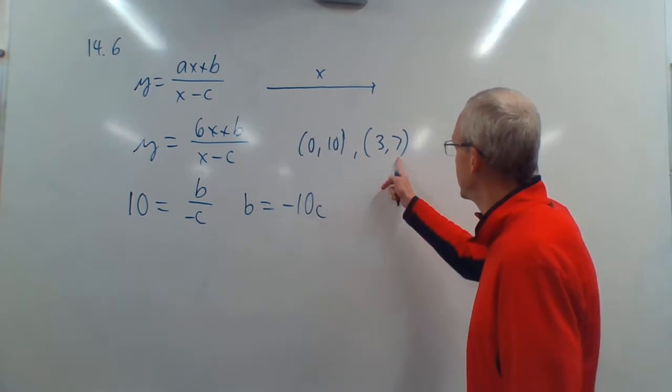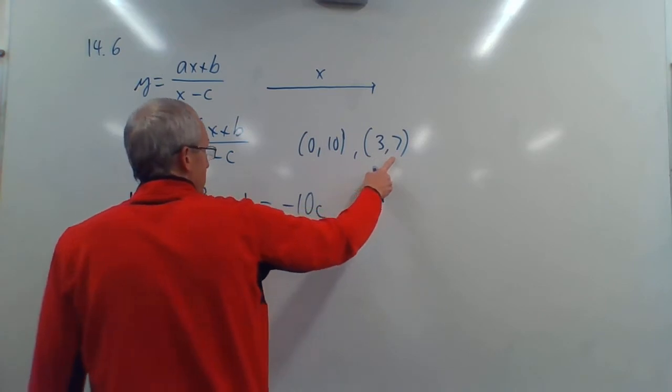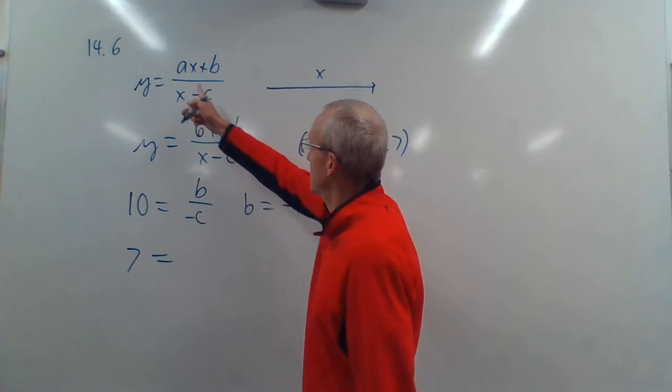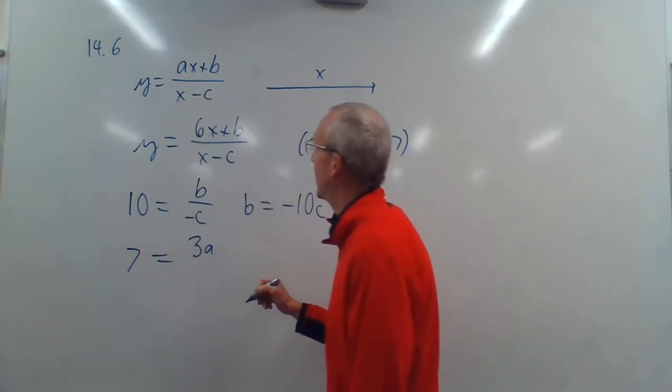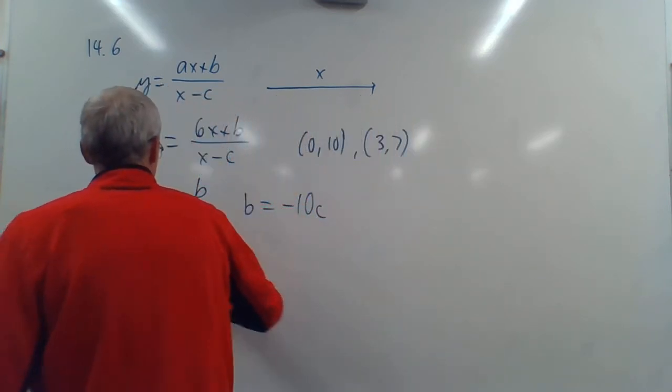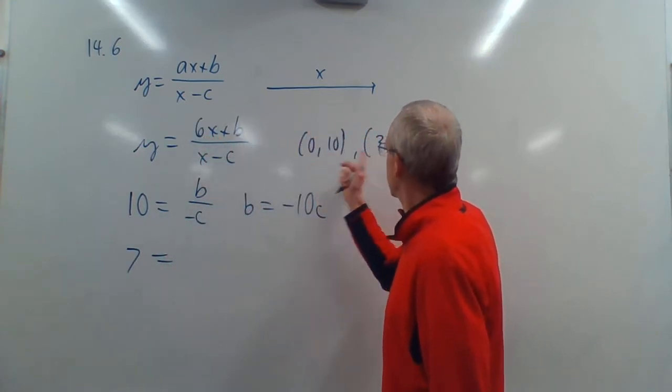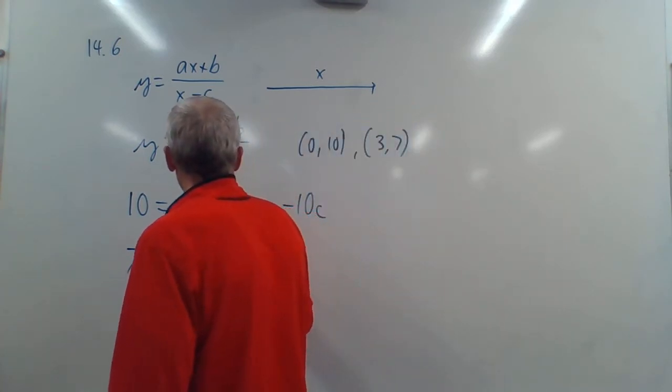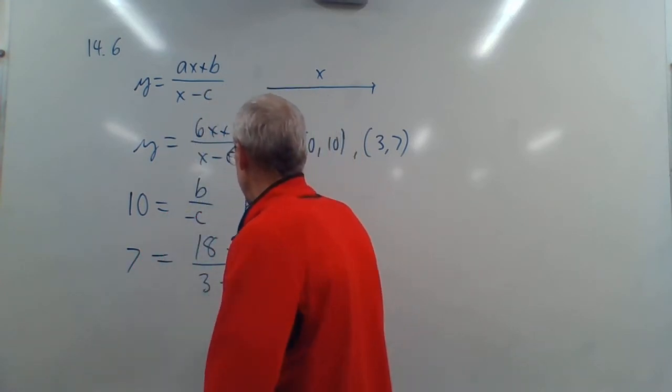Now let's do the other point, 3, 7. Y is 7. Always make sure you get the Y one, right? Second one is the Y. This is the X one. So 7 is equal to X is 3. So it would be 3 times A. It's nice to write the 3 first. The A, plus B. Oh wait, wait, wait, wait. This is our equation. We know what A is. So X is 3. So we have 6 times 3 is 18. So 18 plus B divided by X is 3. So 3 minus C.